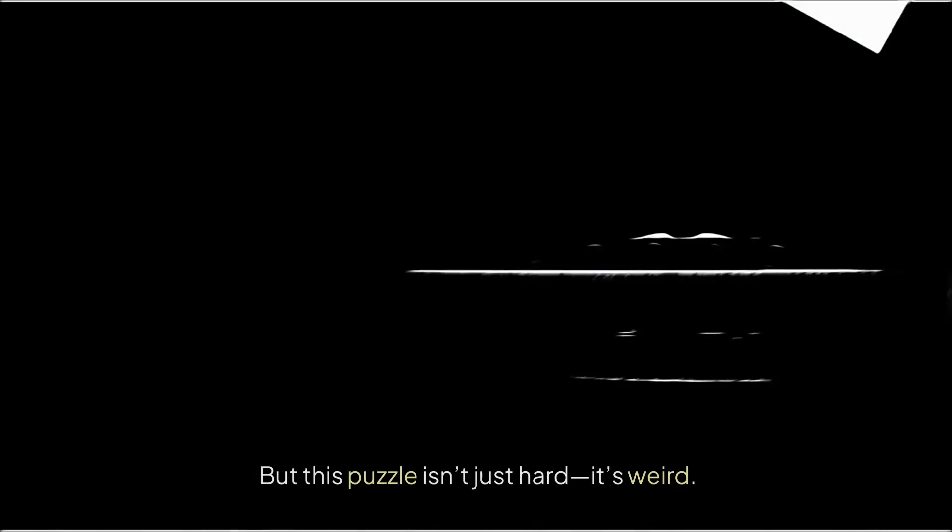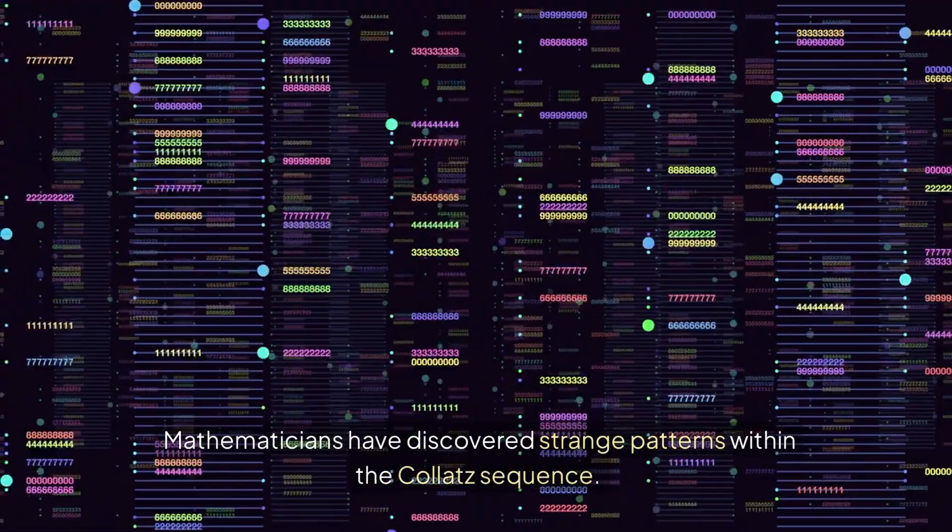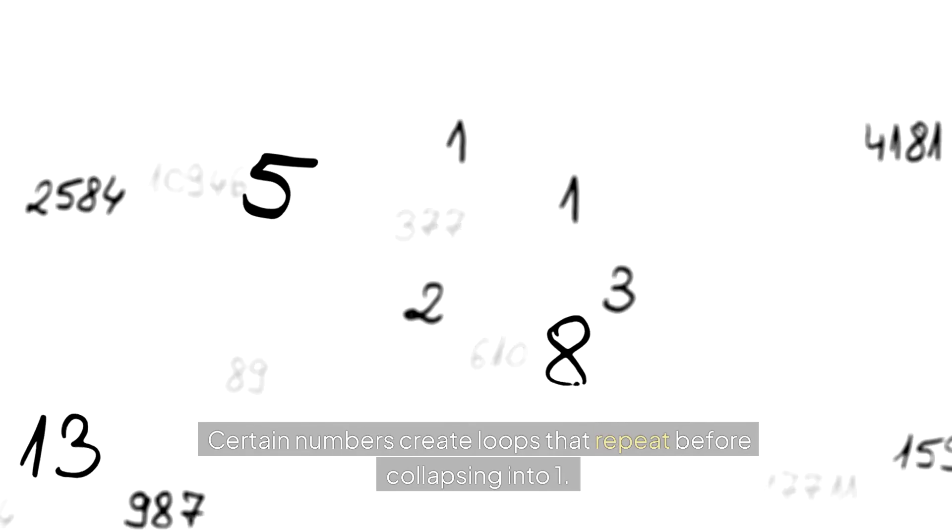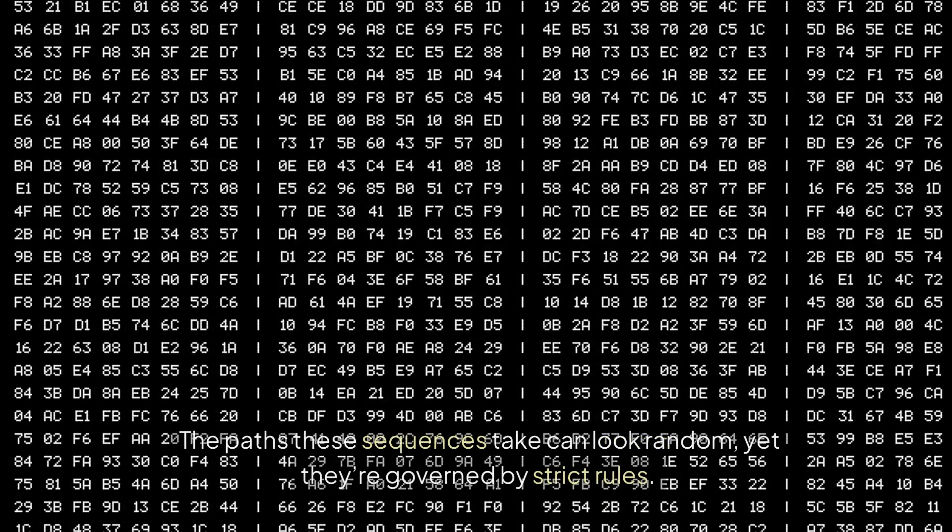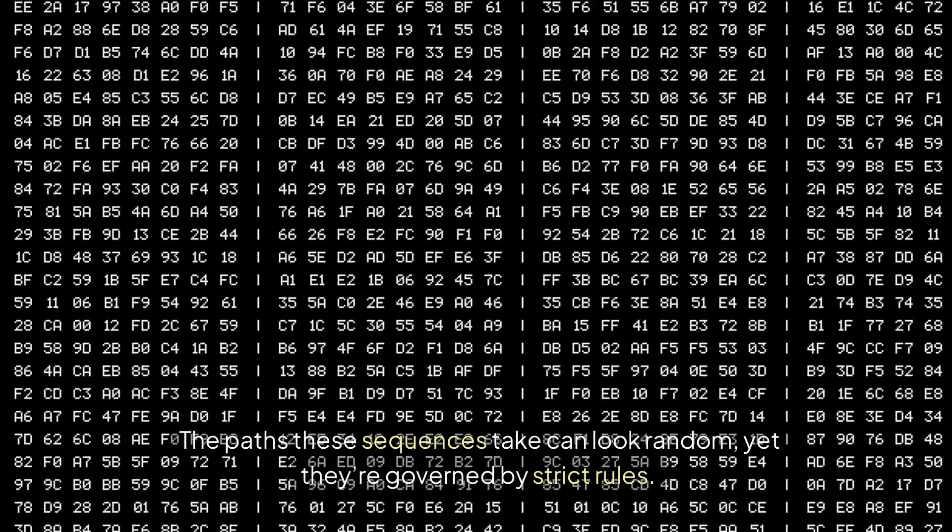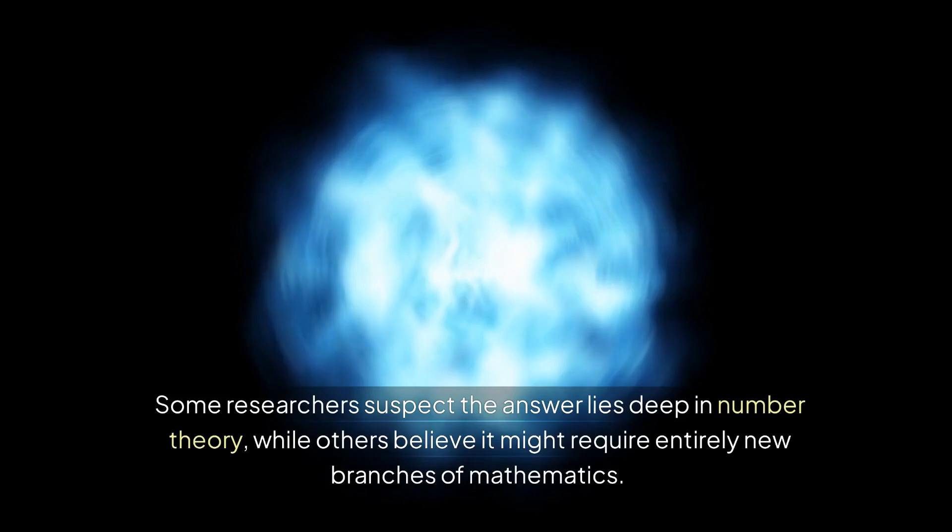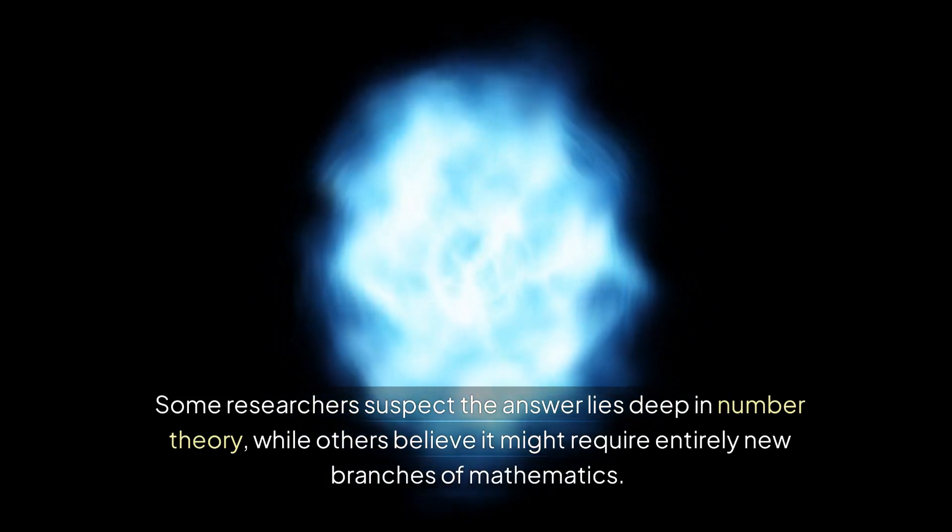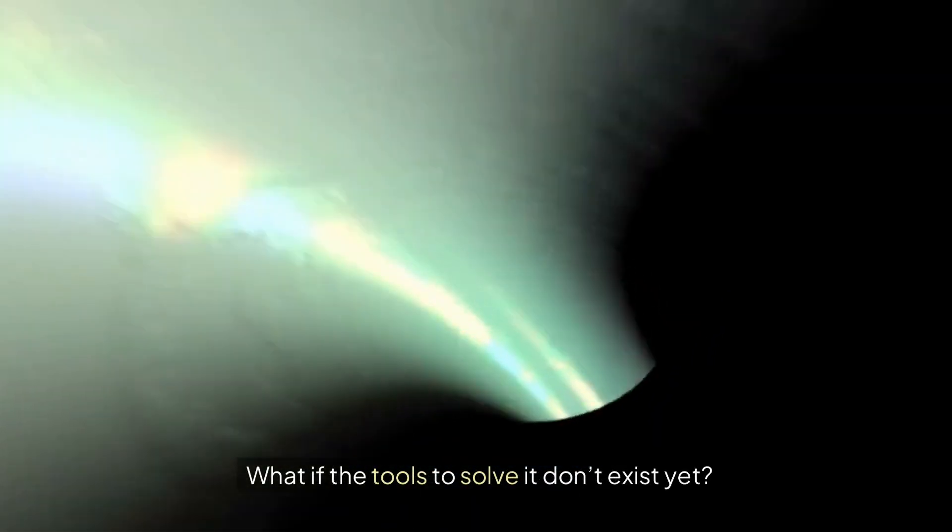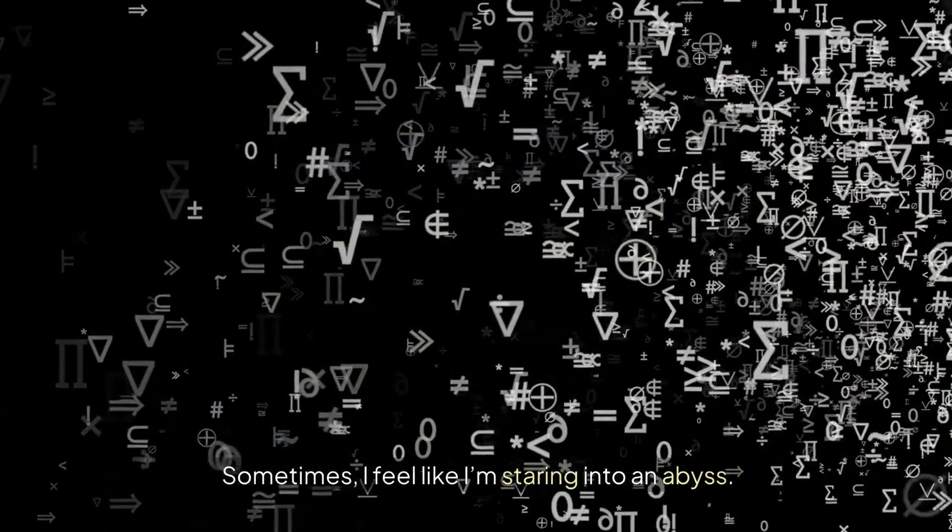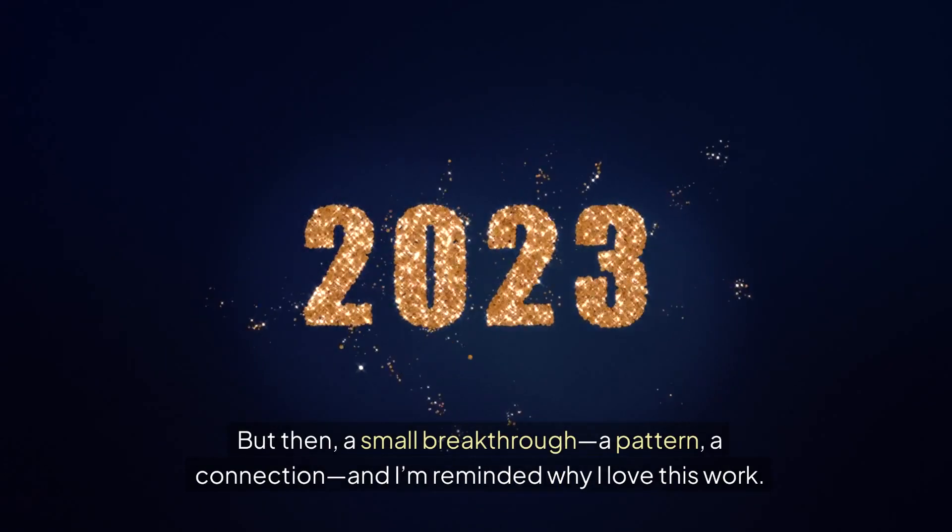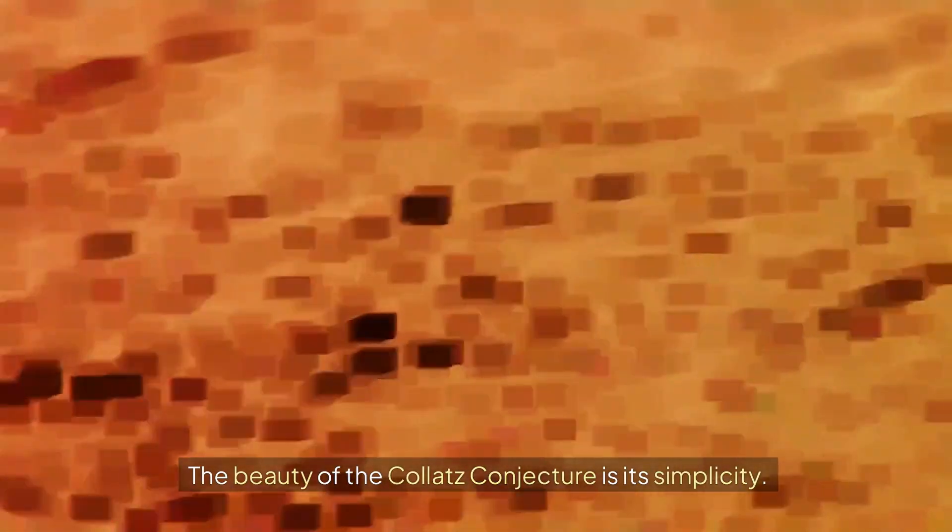But this puzzle isn't just hard—it's weird. Mathematicians have discovered strange patterns within the Collatz sequence. Certain numbers create loops that repeat before collapsing into one. The paths these sequences take can look random, yet they're governed by strict rules. Is it chaos, or is there a hidden order we've yet to see? Some researchers suspect the answer lies deep in number theory, while others believe it might require entirely new branches of mathematics. What if the tools to solve it don't exist yet? The beauty of the Collatz Conjecture is its simplicity.